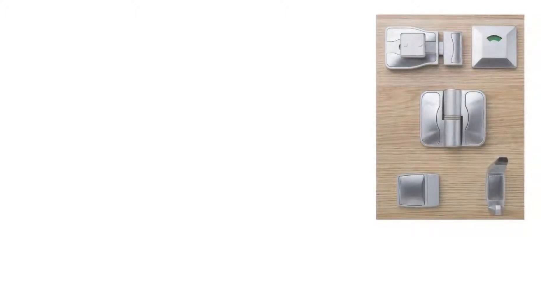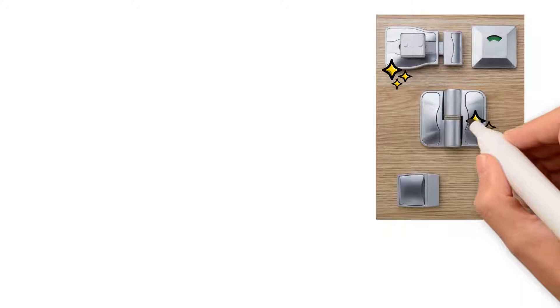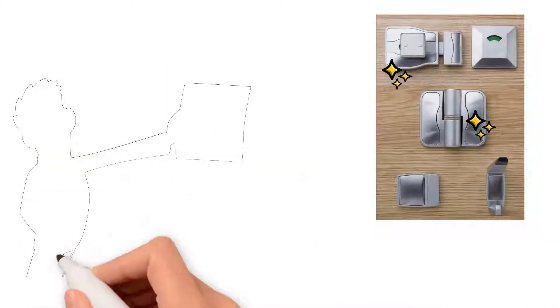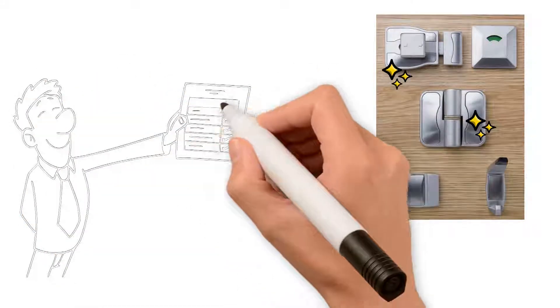At Metlam Australia, we want to ensure that your toilet partition hardware stays looking as good as new. Our hardware is manufactured using the finest 304 grade stainless steel or ZP3 zinc alloy that is electroplated and finished in a satin chrome, designer black, or antimicrobial coating.